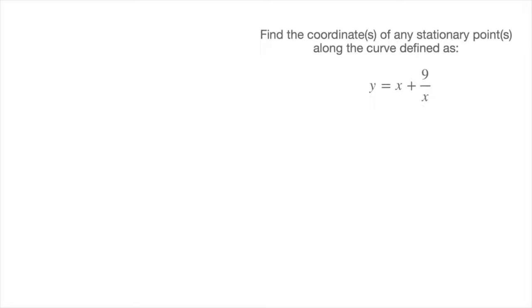To find stationary points, we follow our three-step method. Step one: we need to find the derivative function — find dy/dx. In this case, our function is y equals x plus 9 over x, and we can differentiate this function using the power rule.